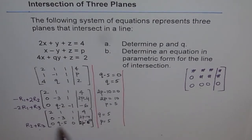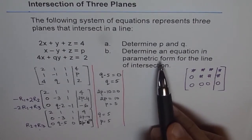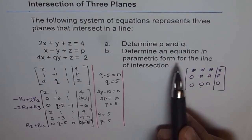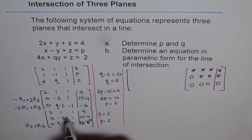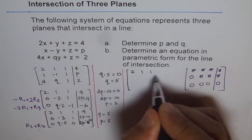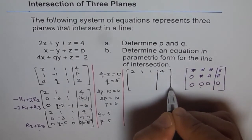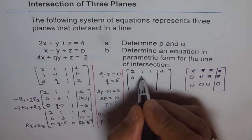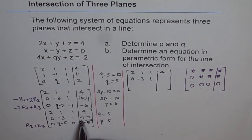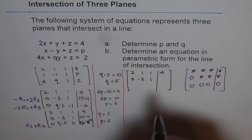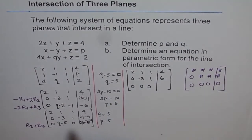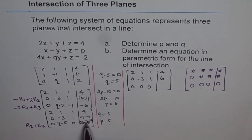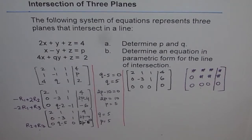Now we plug in these values and solve part B — finding the parametric equation of the line of intersection. Substituting P equals 5 and Q equals 5, the reduced matrix becomes: row 1 is 2, 1, 1, 4; row 2 is 0, minus 3, 1, 6 (since 2 times 5 minus 4 is 6); and row 3 is 0, 0, 0, 0. The last row of all zeros is exactly what we expected.